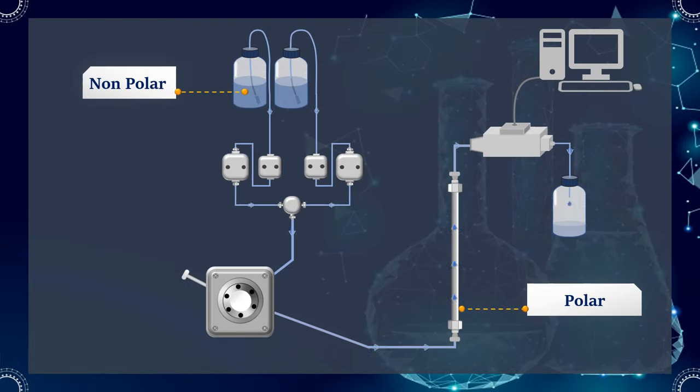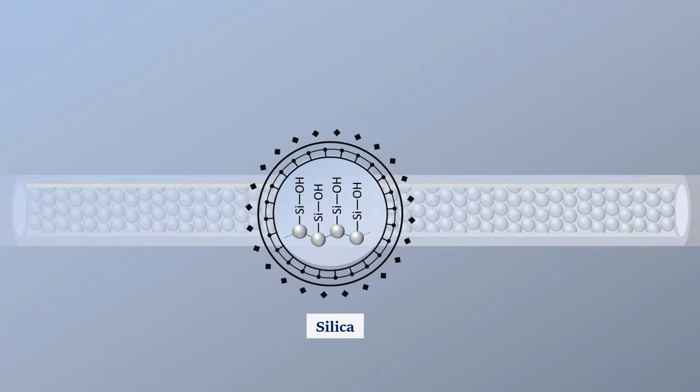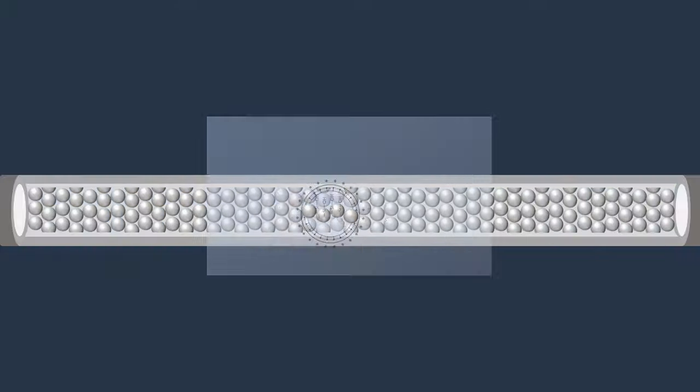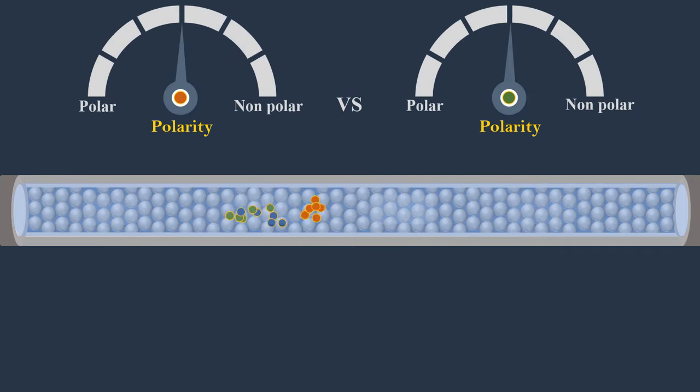In normal phase chromatography, the stationary phase is polar and the mobile phase is non-polar. This method separates analytes based on their affinity for a polar stationary surface, such as silica. In this case, the more polar the analytes are, the more retained they will be on the stationary phase. The more hydrophobic they are, the more they will prefer the mobile phase.